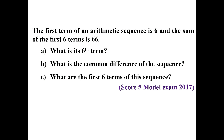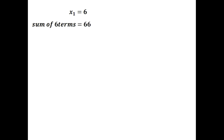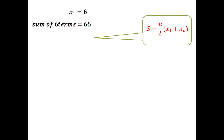Next question from model examination 2017 (score: 5): the first term of an arithmetic sequence is 6 and the sum of the first 6 terms is 66. Find the sixth term, the common difference, and the first 6 terms. We know the sum of n terms = (n/2) × (first term + nth term).